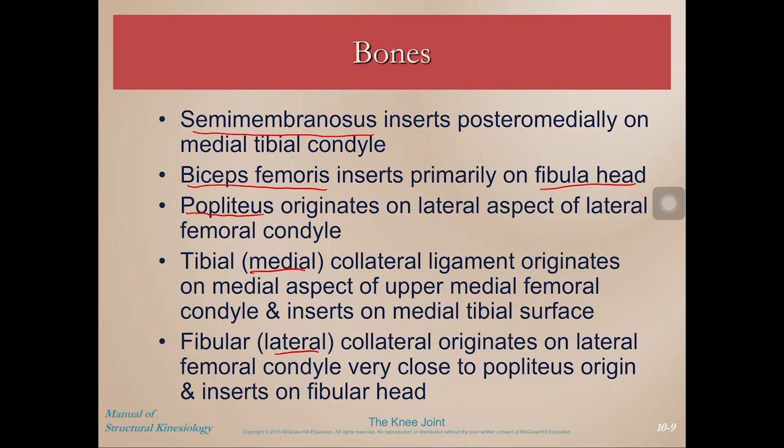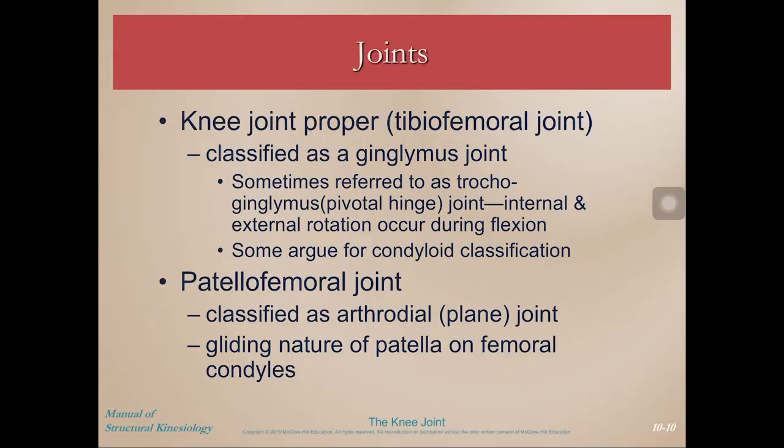The medial and lateral collateral ligaments — also called the tibial and fibular collateral ligaments — provide medial and lateral stability. The medial collateral ligament originates on the upper medial femoral condyle and inserts on the medial tibial surface, keeping you out of knee valgus. The lateral collateral ligament originates on the lateral femoral condyle, close to the popliteus origin, and inserts on the fibular head.